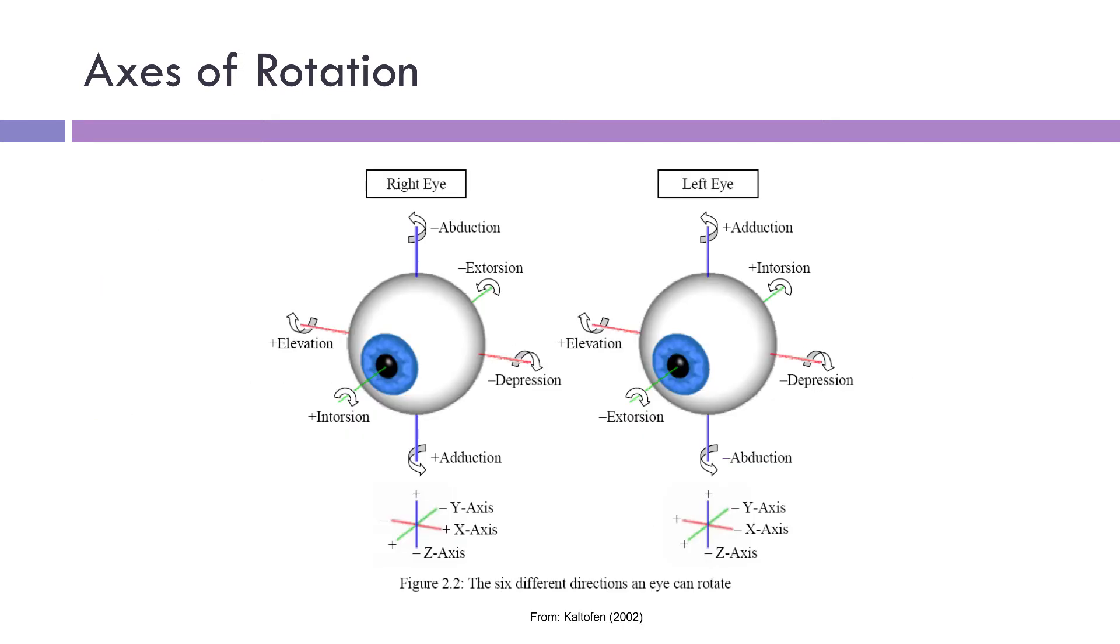Let's take a closer look at this using this image where we've got a bit more of a 3D perspective. If we take the right eye, we can see here the z-axis, the vertical axis. If you rotate around this axis, what will happen is you'll get a horizontal eye movement, so you'll see the eye either move out towards the ear or in towards the nose.